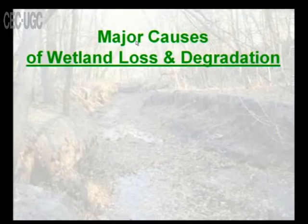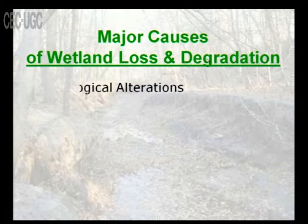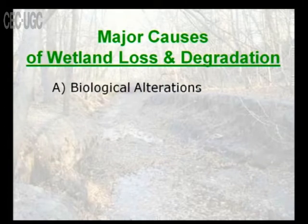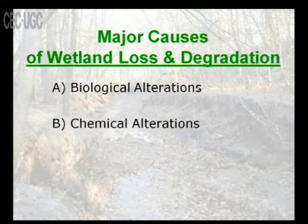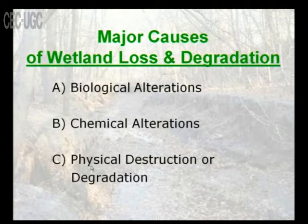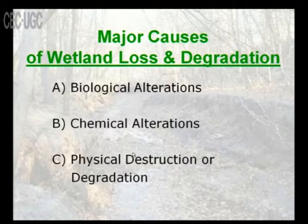The major causes of wetland loss and degradation are biological alterations, chemical alterations, and physical destruction or degradation. We are altering the environment or ecology biologically, chemically, or physically — and by all these ways we are degrading the wetland ecosystem.